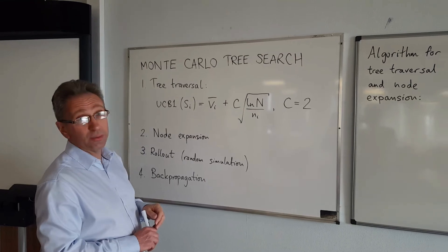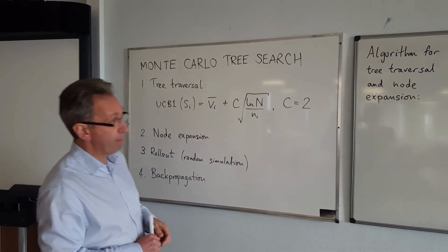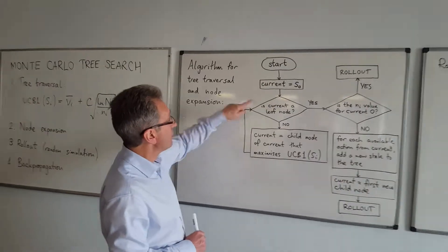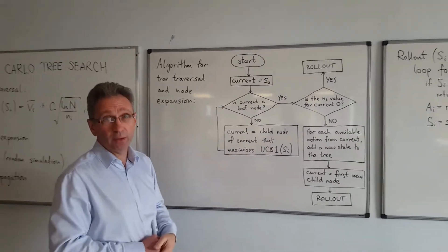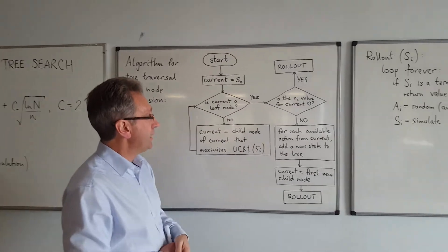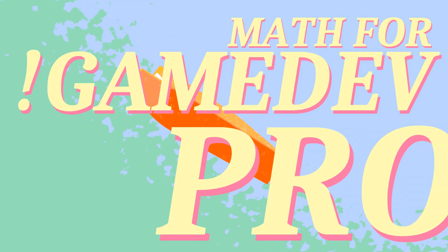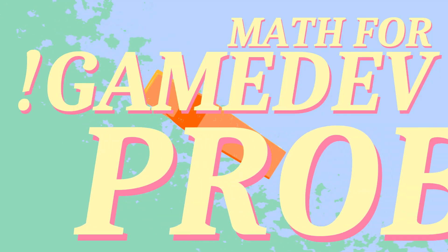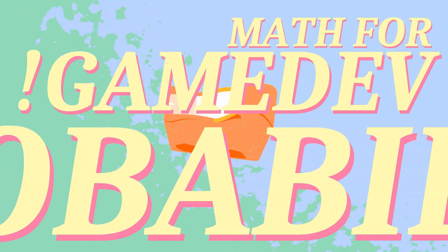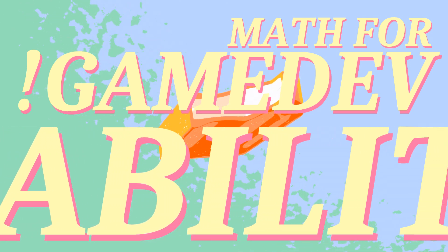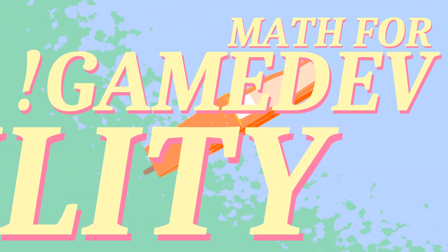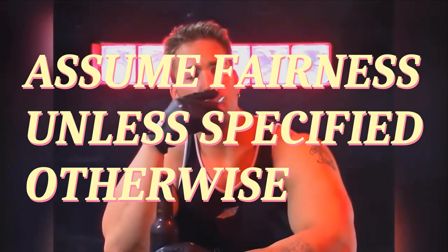Maybe if you want to create a real 500 IQ AI system you'd use Monte Carlo tree search or Bayesian game theory decision making, but if you're implementing those systems this video is not going to be anything novel. So while this may be in the math for game dev playlist, that's in name only. As is now channel tradition, we'll proceed at breakneck pace through basically a probability 101 course.